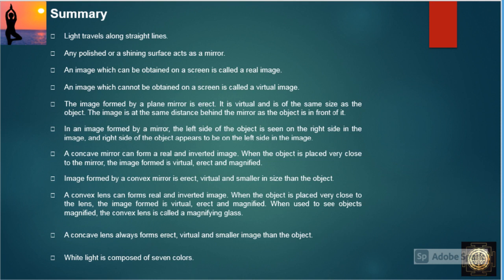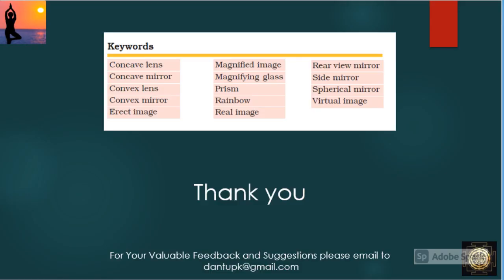A convex lens can form a real and inverted image. When the object is placed very close to the lens, the image formed is virtual, erect, and magnified. When used to see objects magnified, the convex lens is called a magnifying glass. A concave lens always forms an erect, virtual, and smaller image than the object. White light is composed of seven colors. Thank you all for listening — please stay tuned to this channel for more updates.